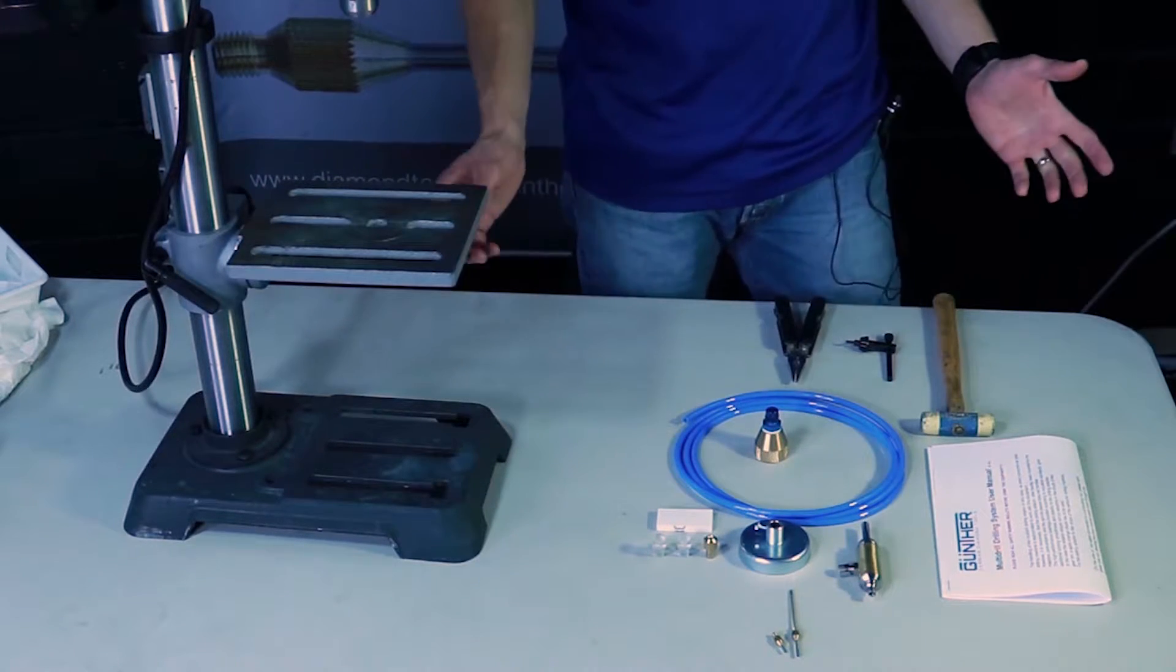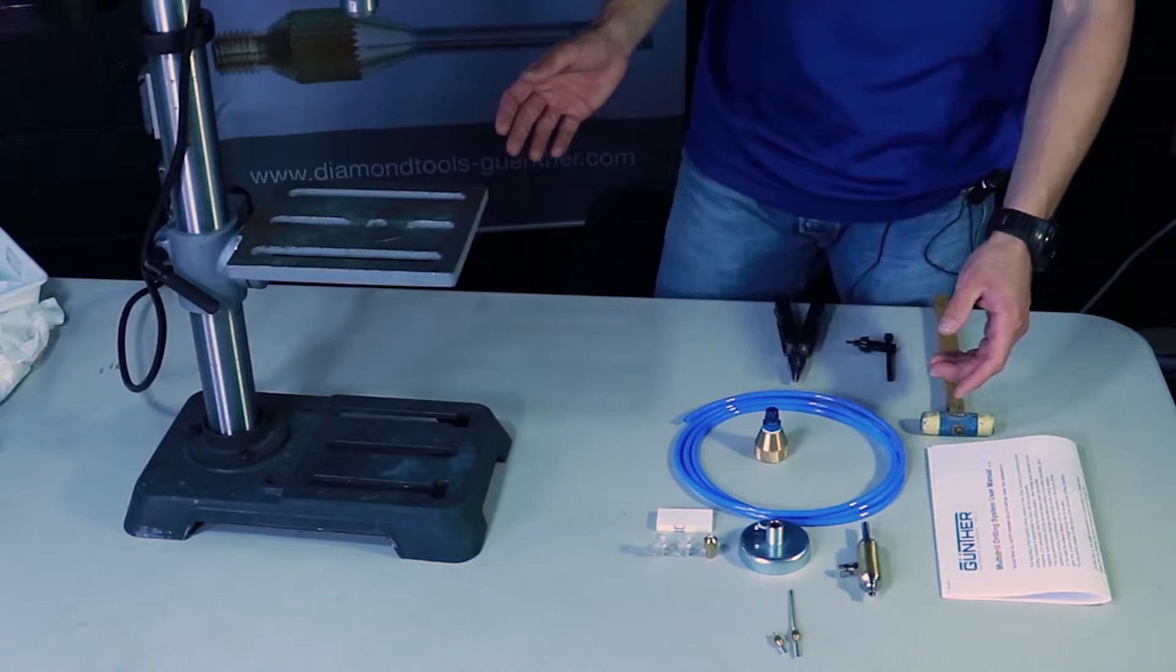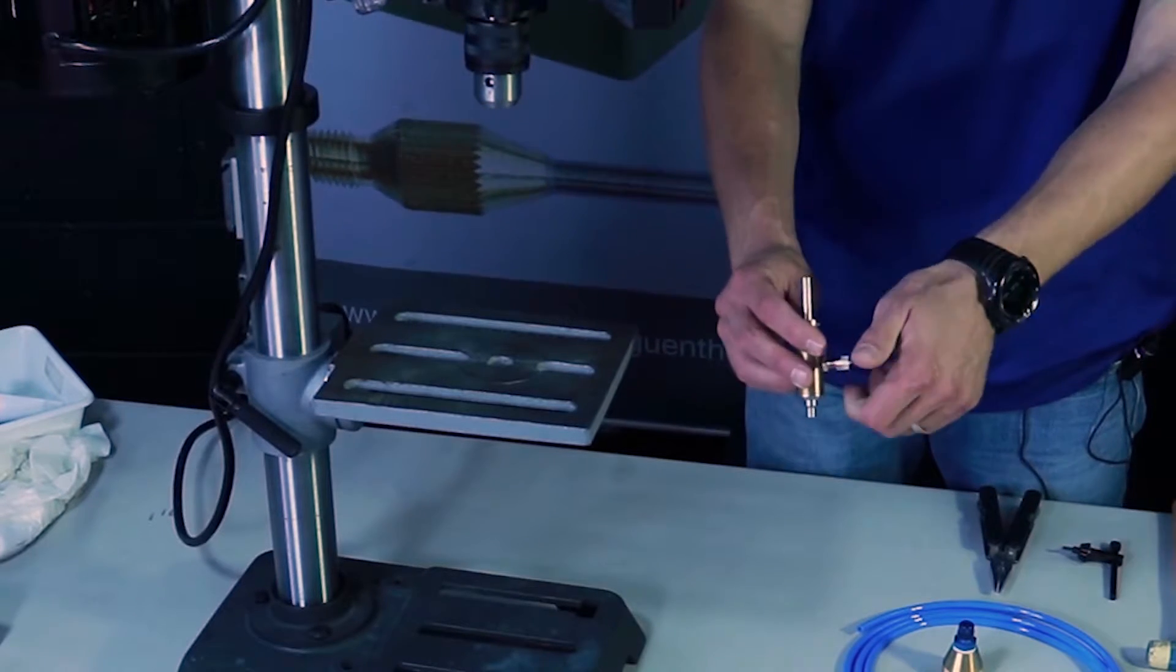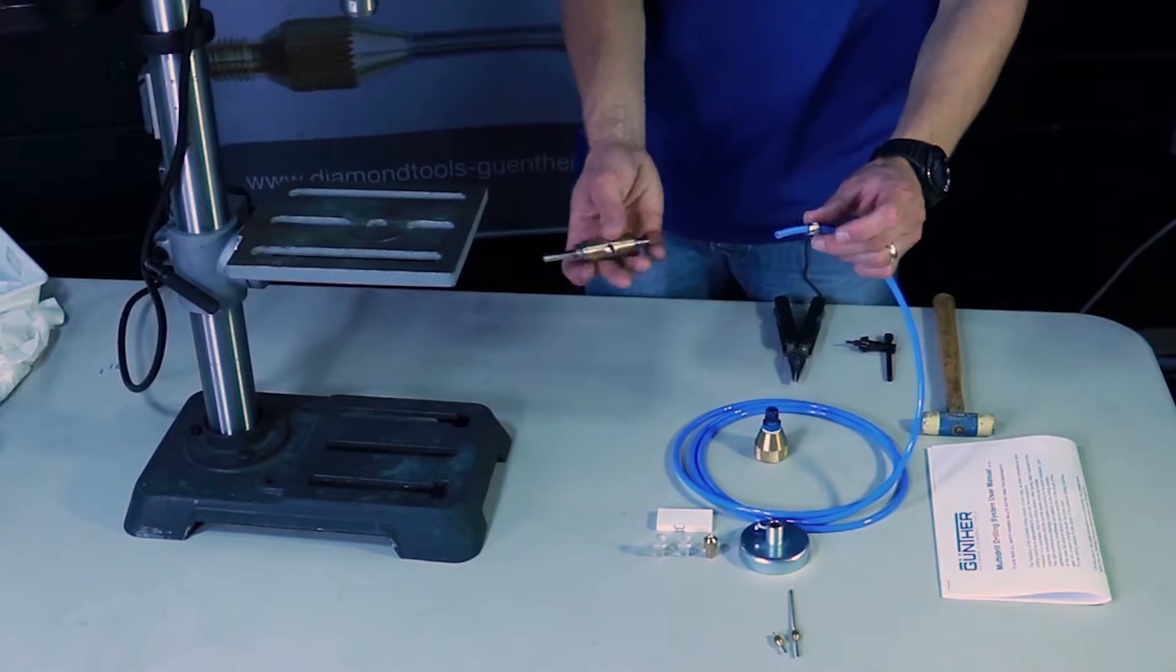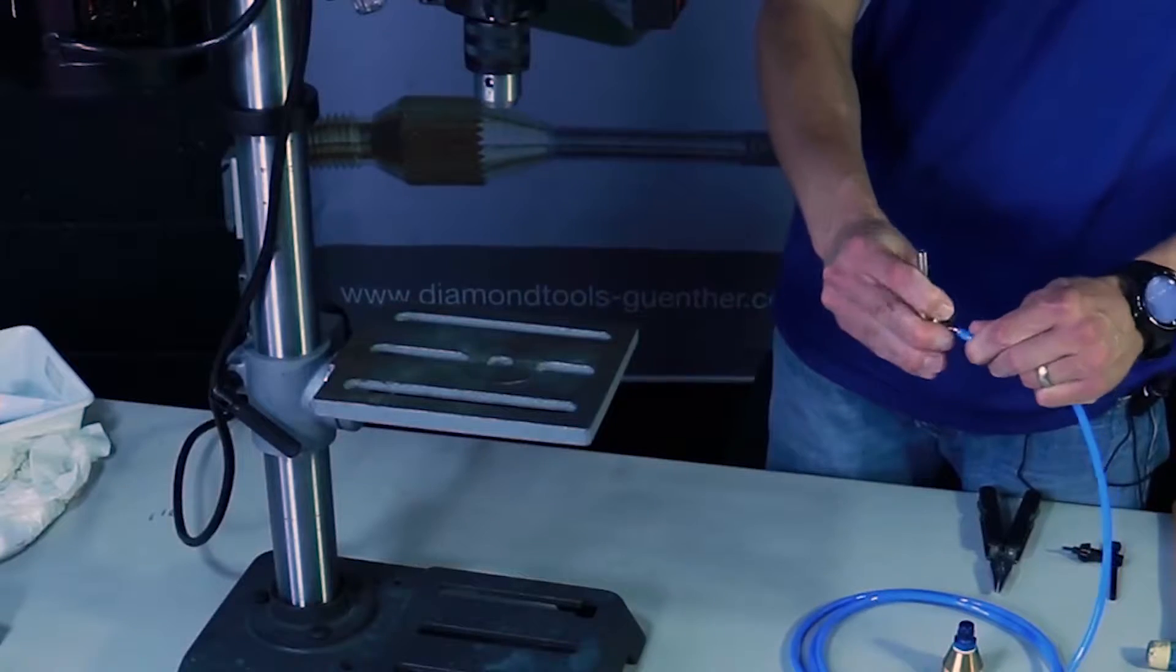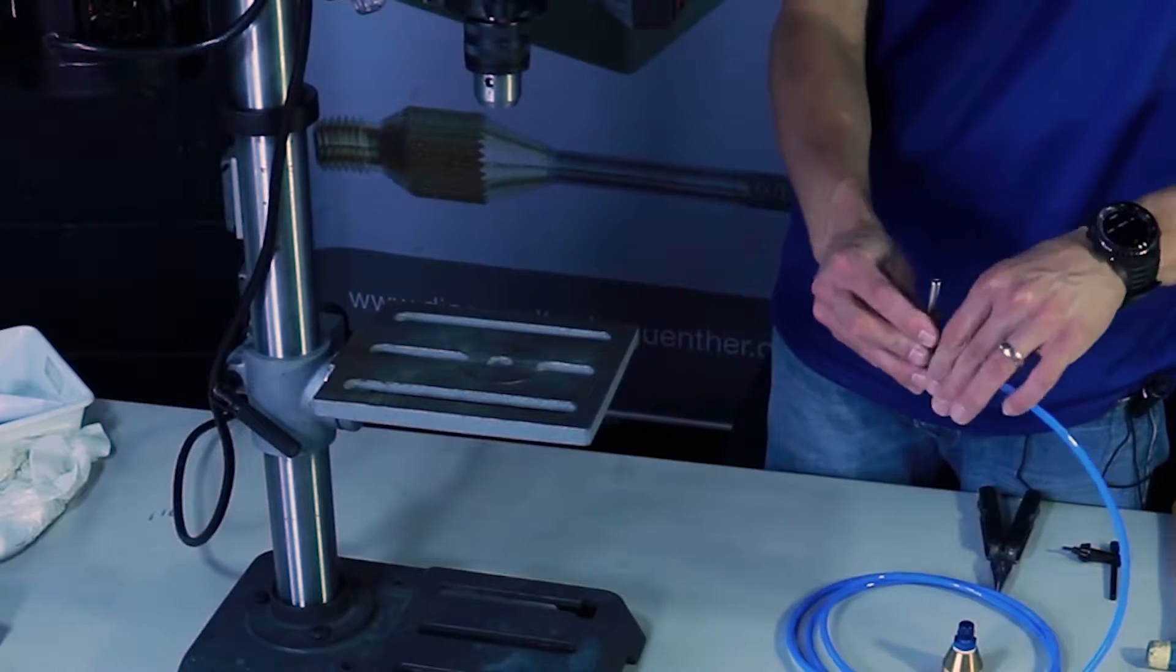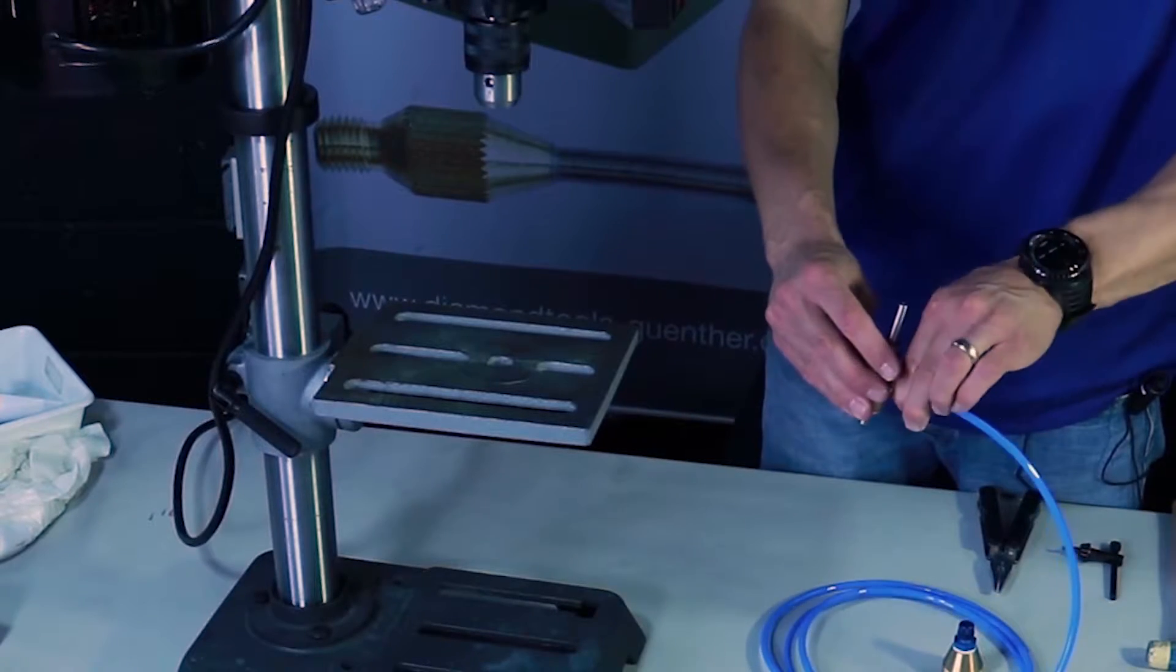Once you've ordered your multi-drill and received the package and unboxed everything, I typically start with connecting the water system. So this is a compression fitting on the drilling spindle. Just unthread the nut and put the nut on the hose first so that the threaded portion is facing the end of the hose, then the barb there, and then come back and tighten it down. I'm just doing it by hand but it's probably a good idea to grab a pair of pliers and just give it a little extra turn.